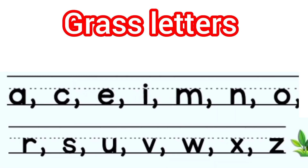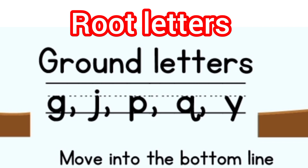Now let's discuss grass letters. Grass letters are those letters that are written on the middle lines — the upper two of the four lines. There are 14 grass letters in small alphabets. For example: a, c, e, i, m, n, o, r, s, u, v, w, x, z.